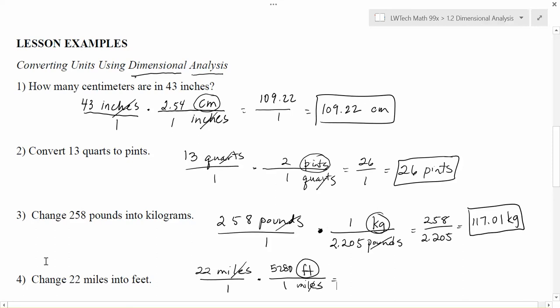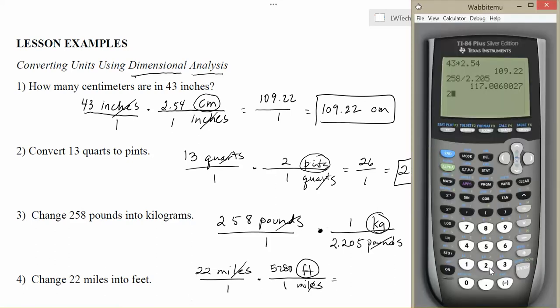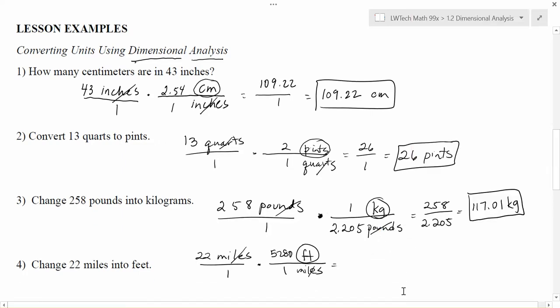This time the number was up on the top, so I've got to do 22 times 5,280, and I end up with 116,160. Divide that by 1 on the bottom, so it's just 116,160. Miles canceled and I'm left with feet. So there are just over 116,000 feet in 22 miles. In the next couple videos we'll see how we can extend this process of getting those units to cancel to solve even more complicated conversion-required problems.